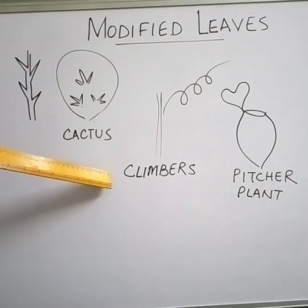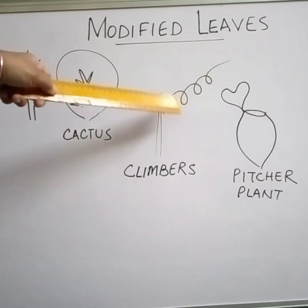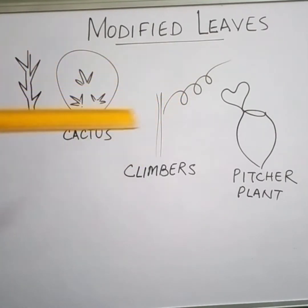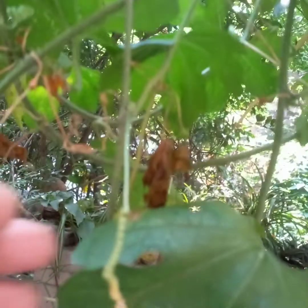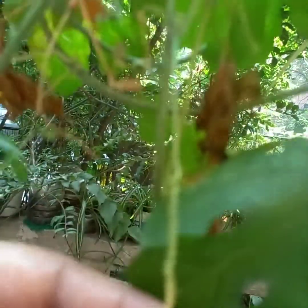In the case of climbers, the leaves are modified to tendrils. These leaves get modified into thread-like tendrils. The tendrils coil around any support and help the plants to climb up. See, these are the tendrils — notice the spring-like structure.